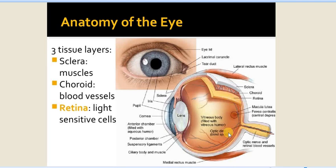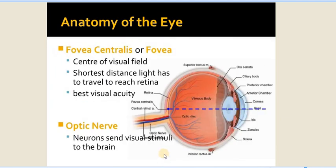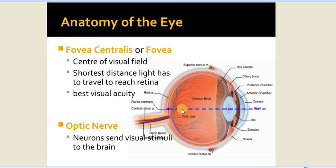The last structure is the retina. In the retina, one important term is fovea centralis — it is the center of the visual field. It is also where light travels the shortest distance to reach the retina, and here there is the best visual acuity. The neurons aggregate and come out of the eyeball as the optic nerve, where they emerge from the eyeball at the optic disc, and the optic nerve carries visual stimuli up to the brain.